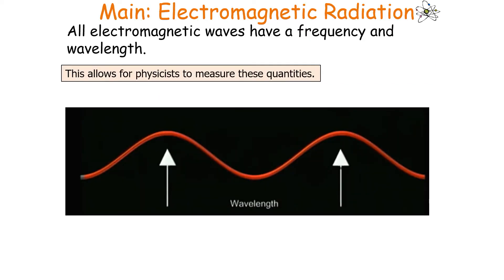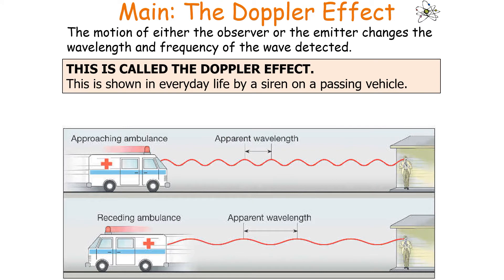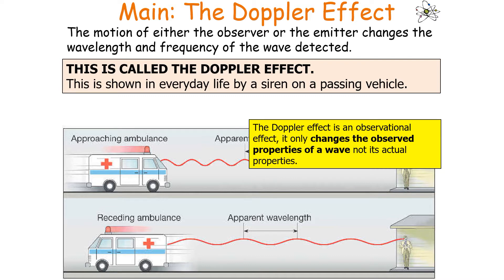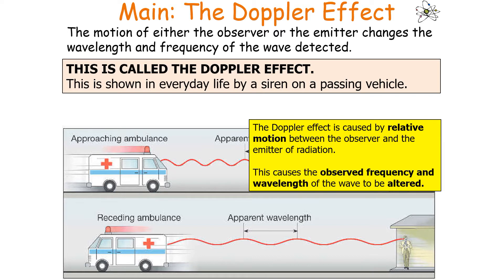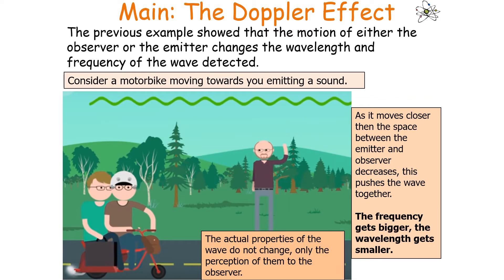All electromagnetic waves have a frequency and a wavelength, which allows physicists to measure these quantities. The motion of either an observer or an emitter changes the wavelength and frequency of the wave detected. This is called the Doppler effect, demonstrated in everyday life by a siren on a passing vehicle. The Doppler effect is an observational effect — it only changes the observed properties of the wave, not its actual properties. It is caused by the relative motion between the observer and the emitter of radiation, which alters the observed frequency and wavelength.